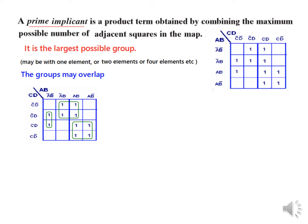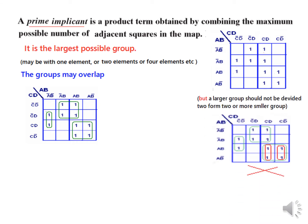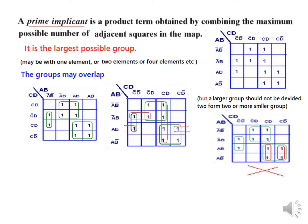What are all the possibilities here? One caution: a larger group should not be divided into two parts. For example, one group cannot be divided into two parts. We can combine two from two different groups, but from one group we cannot make two groups. So looking at all options: these two combined, these four combined, and these two combined. We have a total of six possibilities — six prime implicants.